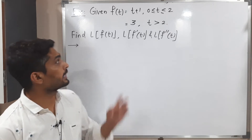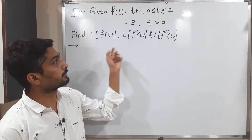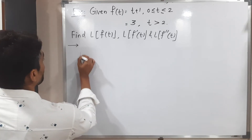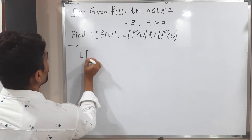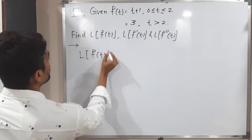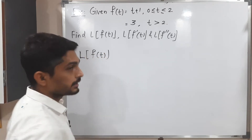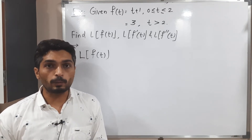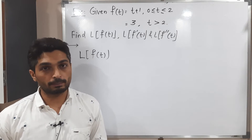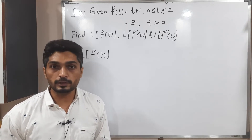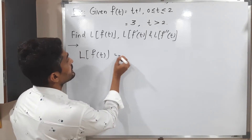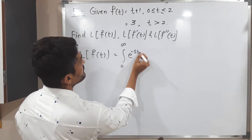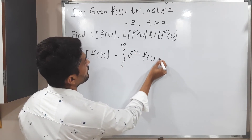First of all, we will find the Laplace of f of t, and after that we will calculate their values. The function has two different definitions, so I will solve this problem using the definition of Laplace transform, which is the integration from 0 to infinity of e raised to minus s t times f of t, dt.